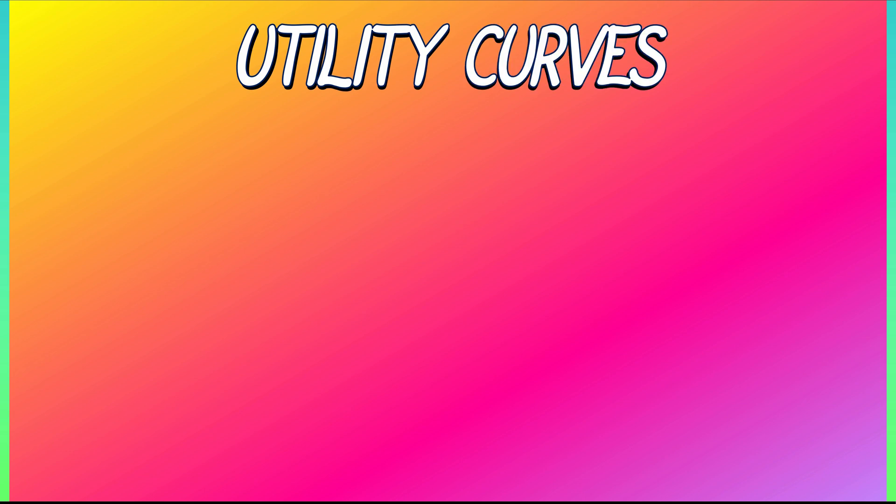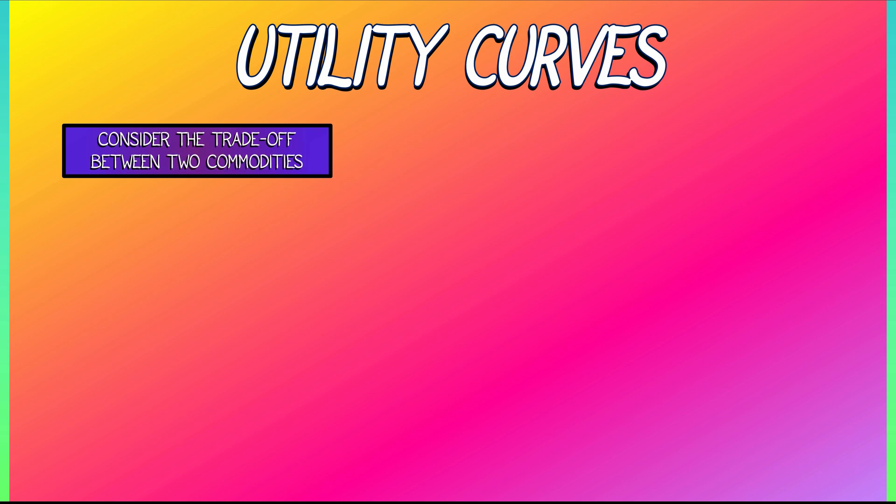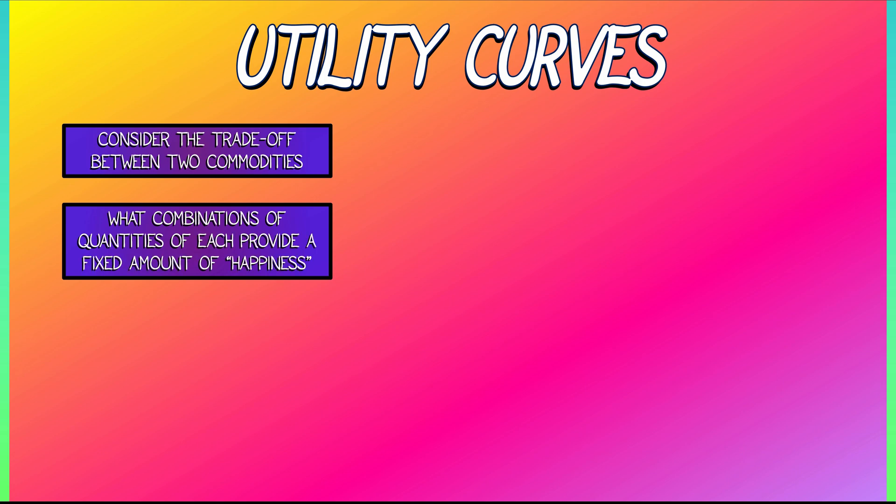This has to do with considering the trade-off between two different commodities, answering questions like what combinations of quantities of each provide a fixed amount of utility or happiness. That is kind of hard to quantify, but let's just roll with it for now. This is the notion of a utility curve.